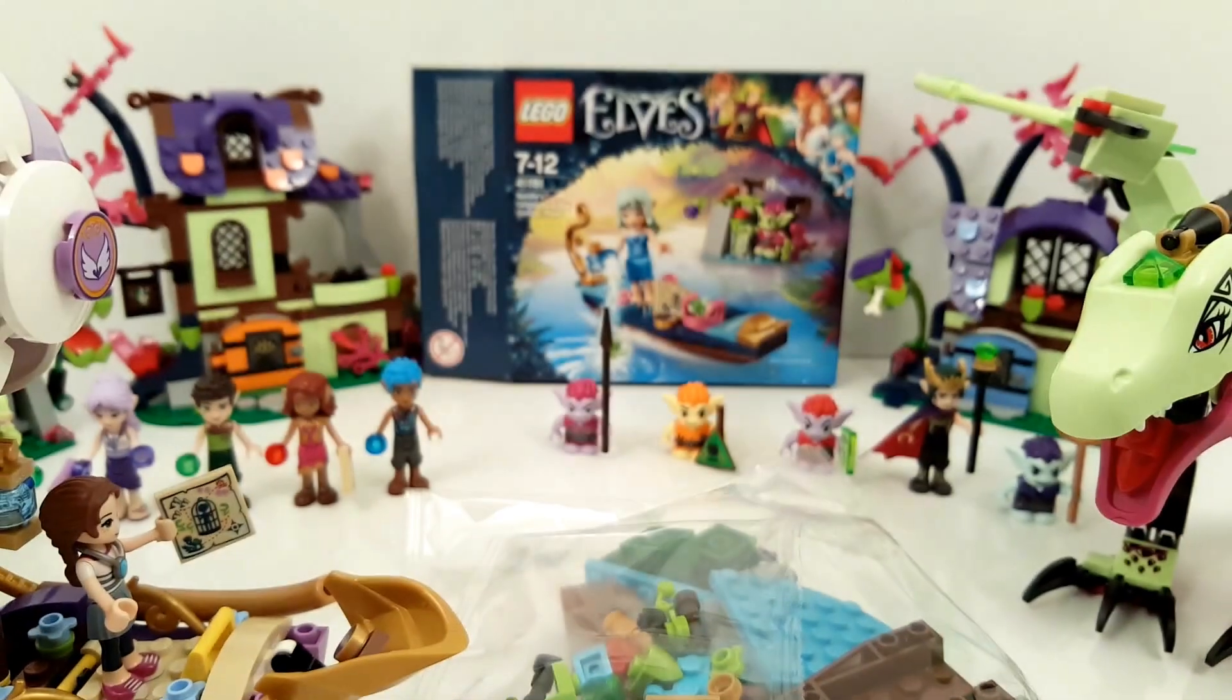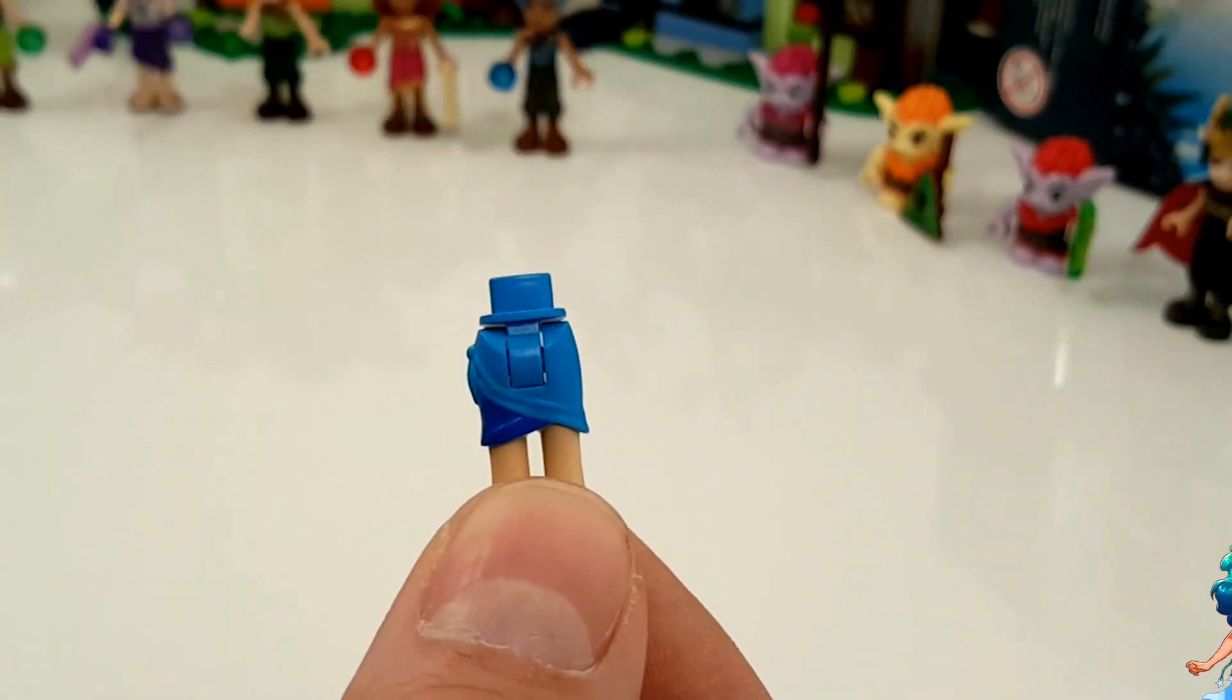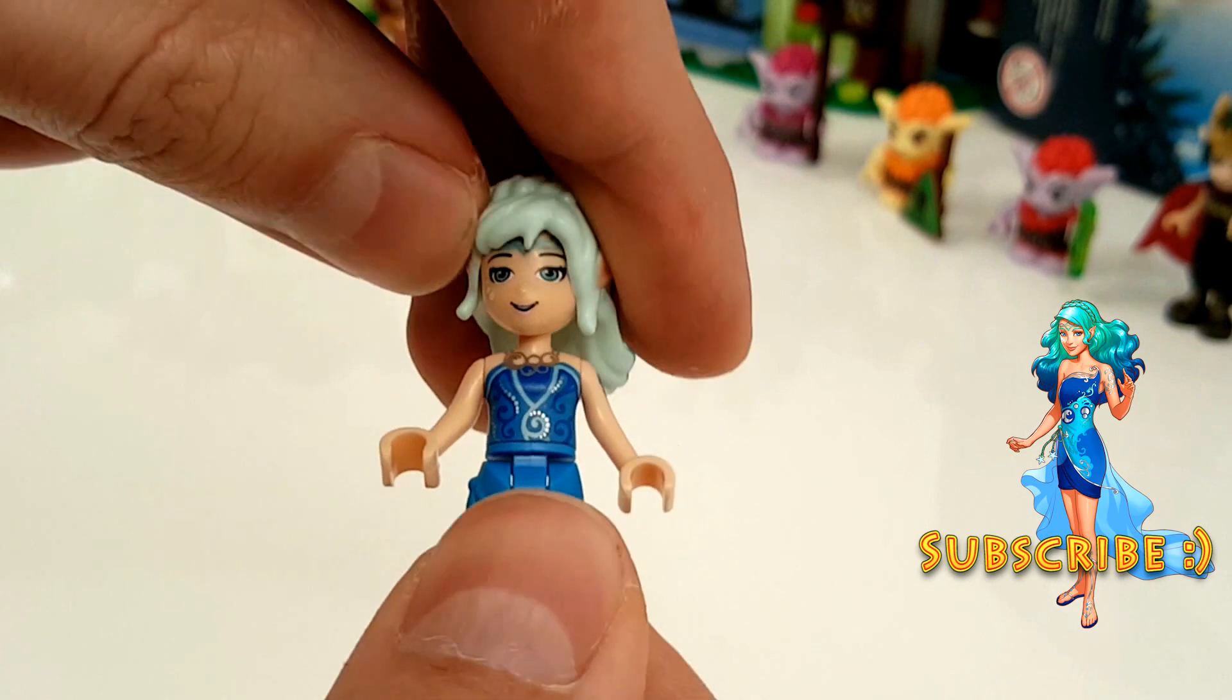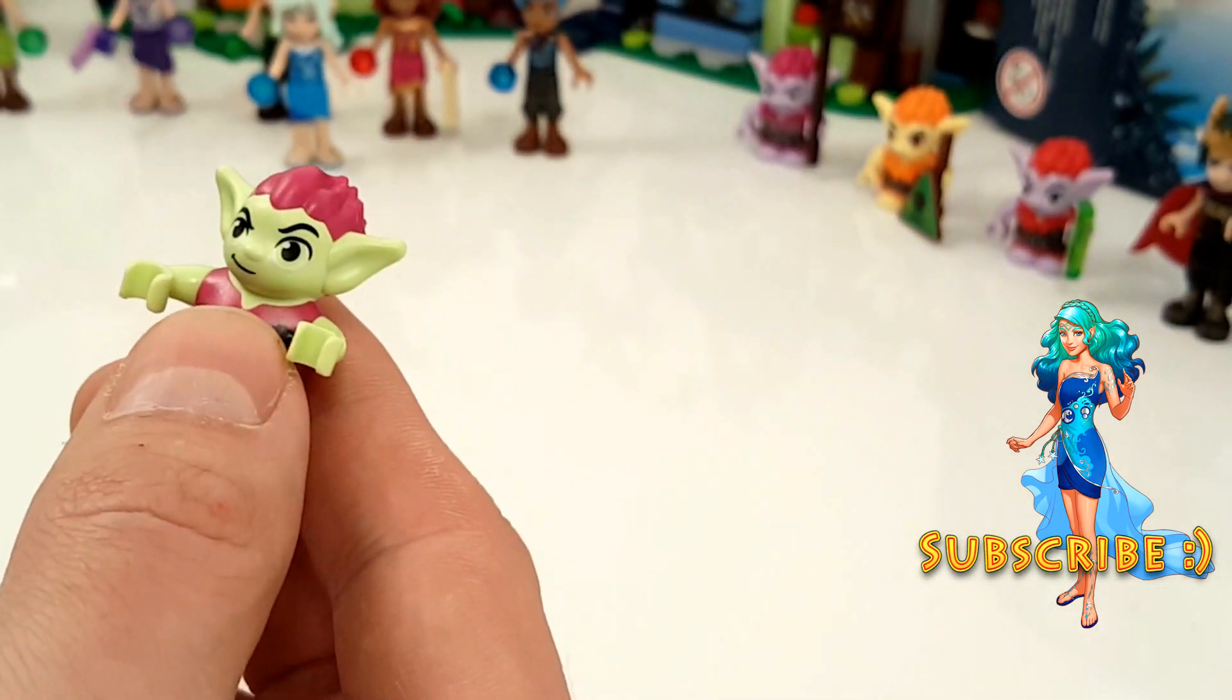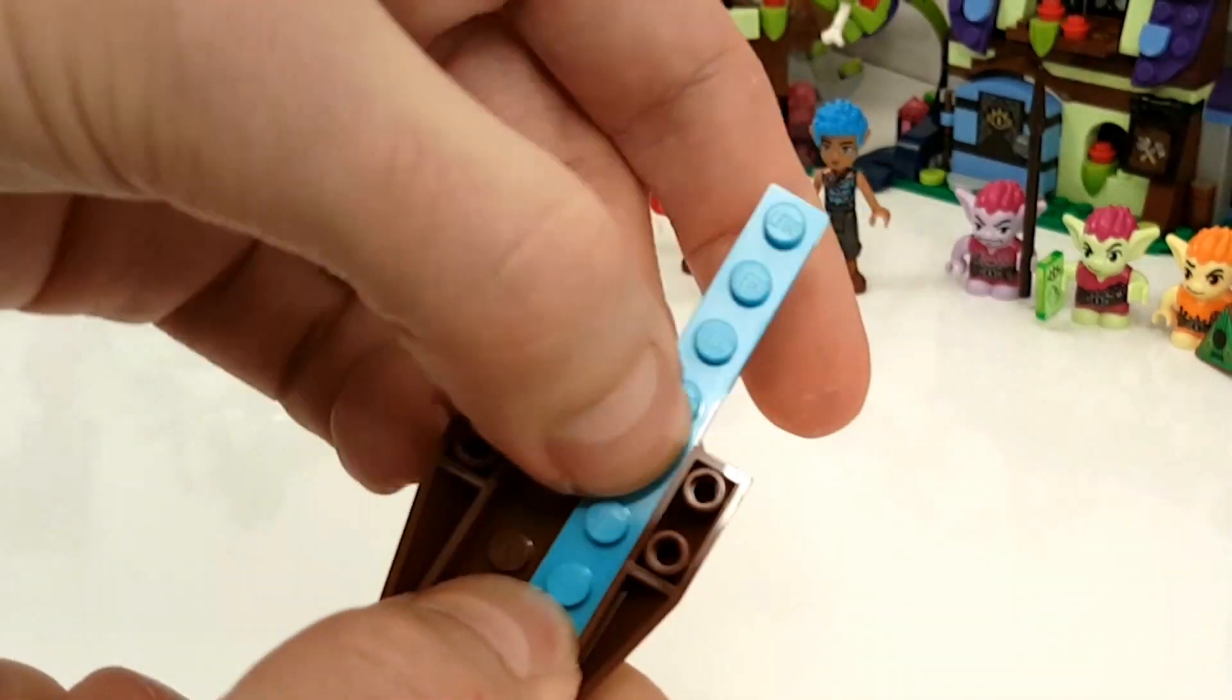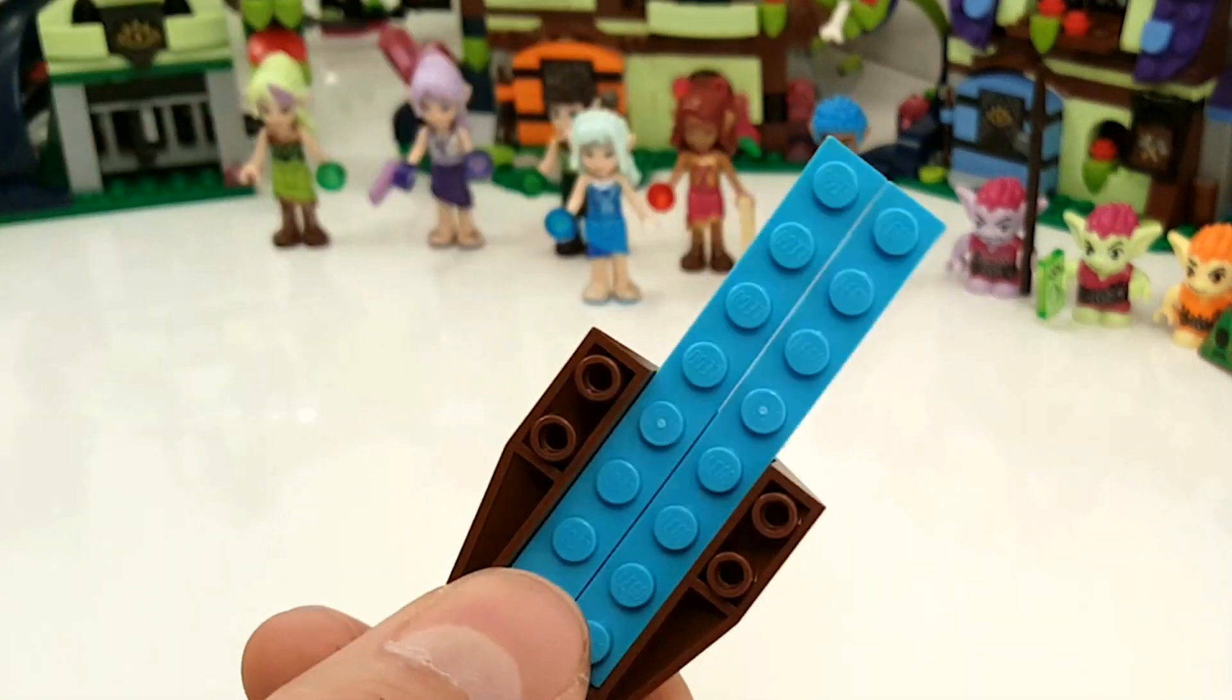That's all really cool but now I want to build the set so let's go. Here we're building Naida, the Water Elf, and Roblin the Goblin. I'll give him some instructions to get the crystals. And here we're building the Gondola.